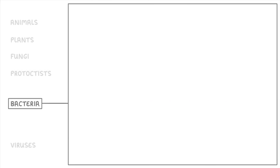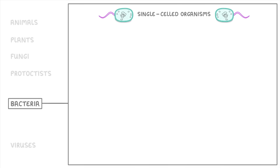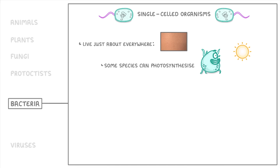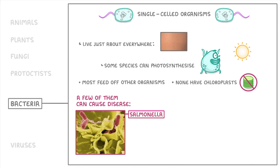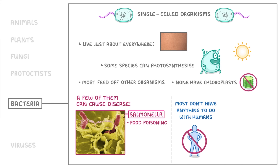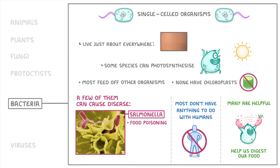Next, we have bacteria, which we'll be coming back to in other videos because there's loads of interesting stuff to know about them. For the basics, these are single-celled organisms that live just about everywhere you can imagine, including on your skin and in your intestines. Although some species of bacteria can photosynthesize, none of them have chloroplasts, and most feed off other organisms — either living ones like ourselves, or dead ones like fallen leaves. Scientists think there are probably far more species of bacteria than all other kingdoms combined. Although a few can cause disease, like Salmonella which causes food poisoning, most don't have anything to do with humans, and many are actually really helpful — like the bacteria in our intestines which help us digest our food.